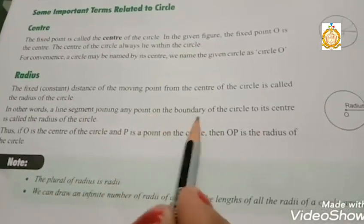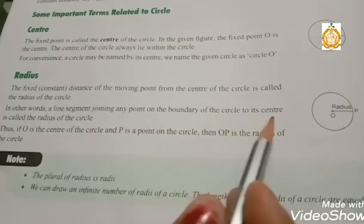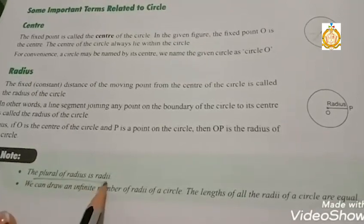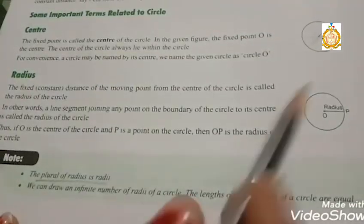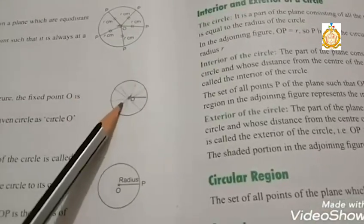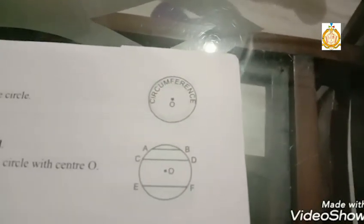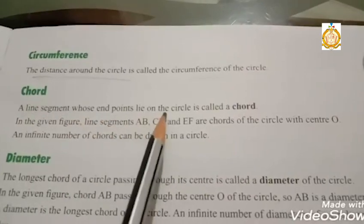In other words, a line segment joining any point on the boundary of a circle to its center is called the radius of the circle. The plural of radius is called radii. You can draw an infinite number of radii. Now, what is circumference? The distance around the circle is called the circumference of the circle.